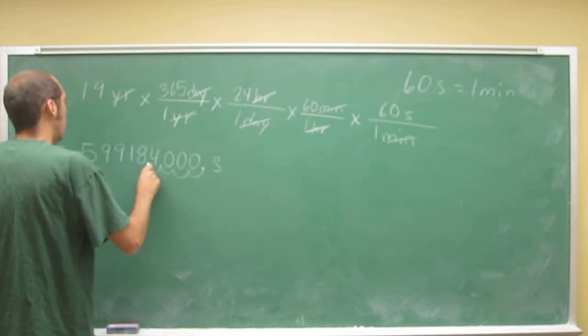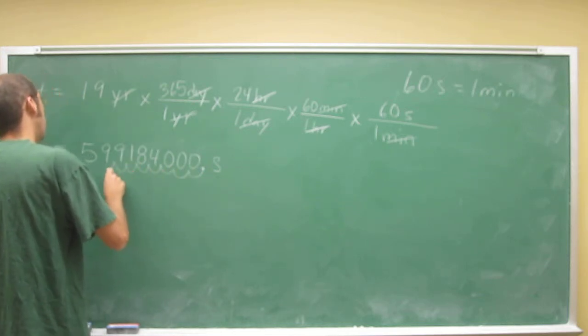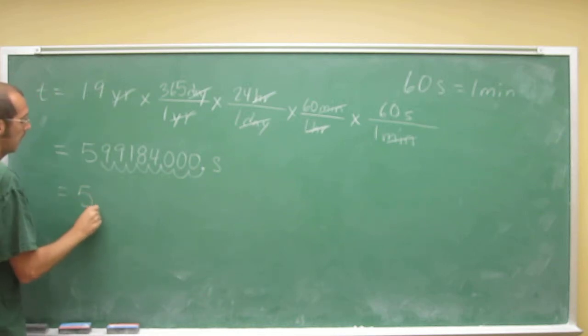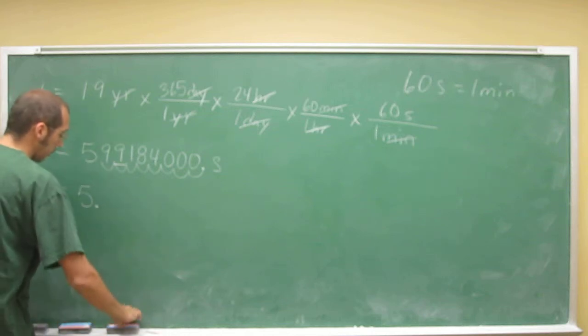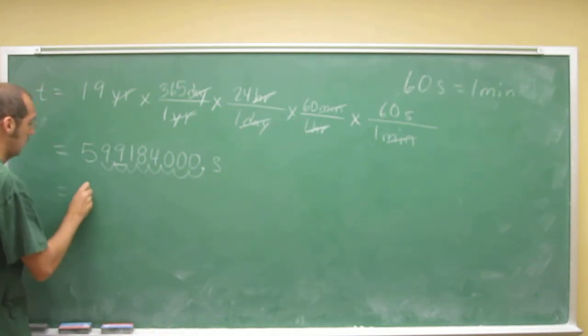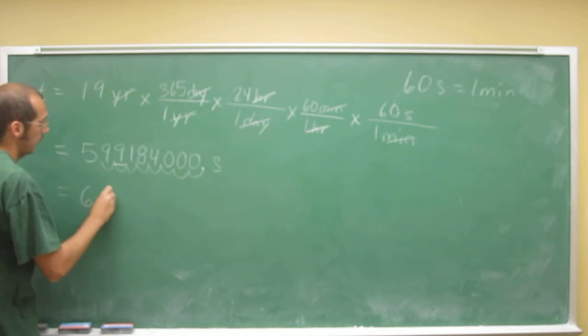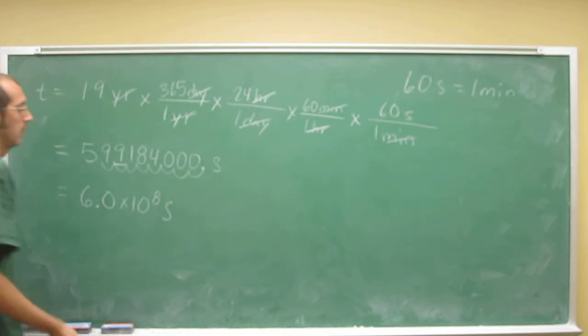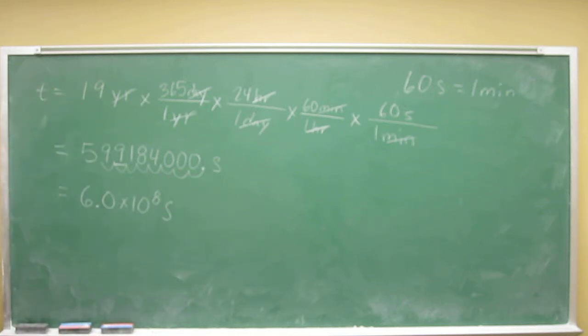So pretend decimal point's there. 1, 2, 3, 4, 5, 6, 7, 8. So we go 5 point, well, now we've got to round up. So 6.0 times 10 to the eighth seconds. That's a lot of seconds that you lived if you were 19 years old. The time is ticking away.